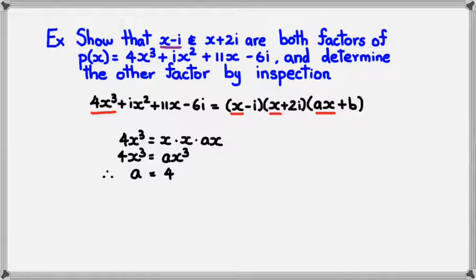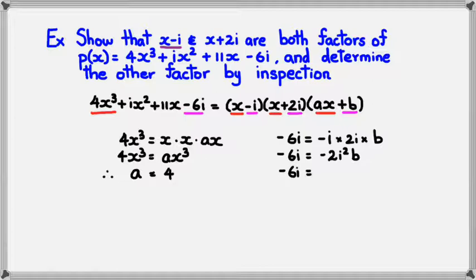Now, trying to figure out the value of b. We know that the final constant will be the product of the last three numbers. For example, negative 6i should be the product of negative i times 2i times b. So writing that separately, negative 6i is equal to negative i times positive 2i multiplied by b. Simplifying this, I'm going to get negative 6i equals negative 2i squared b. Now, I know that i squared equals negative 1, so this would be negative 2 times negative 1b. Simplifying this, I have negative 6i equals 2b, which means b is equal to negative 3i.